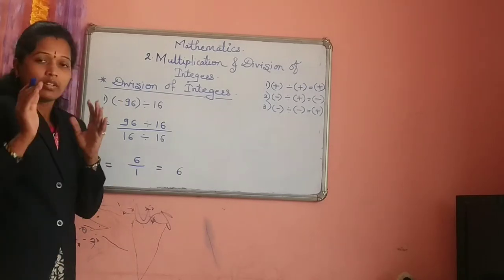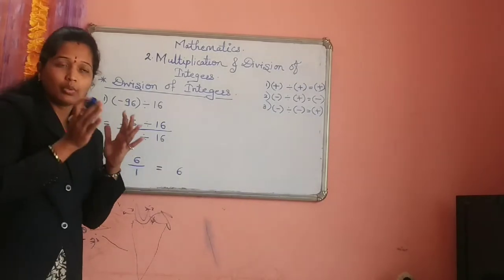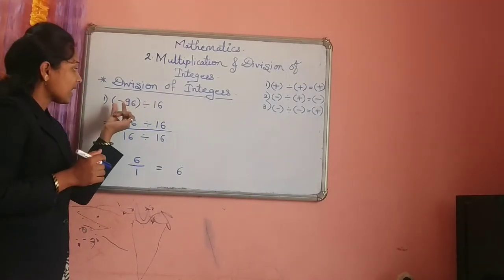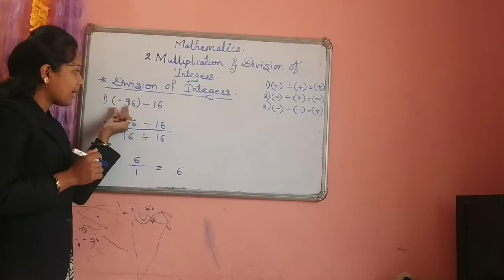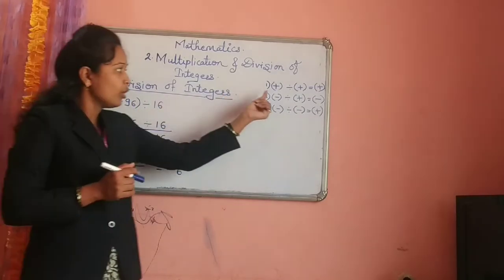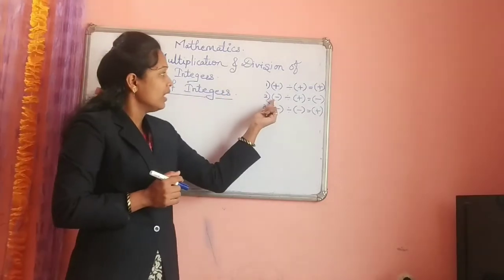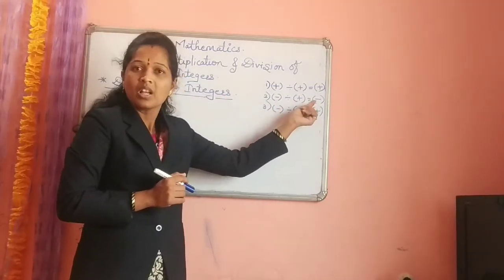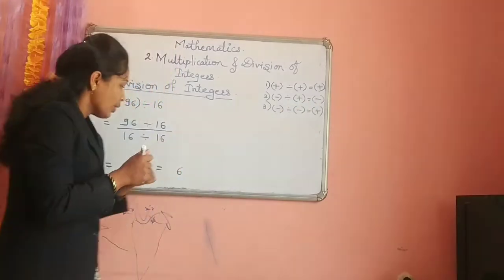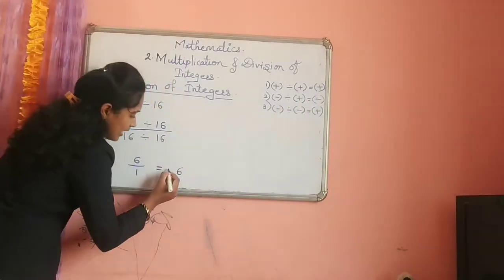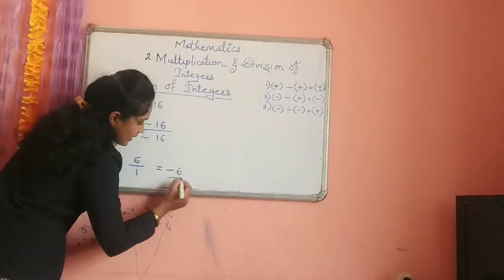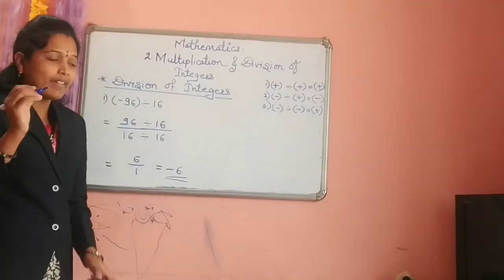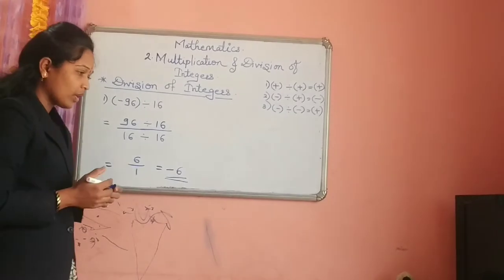But we have to go back to the original question. One number was negative and the other was positive, so by the second rule — negative divided by positive gives negative — our final answer is minus 6.